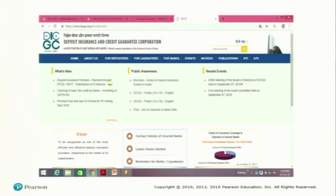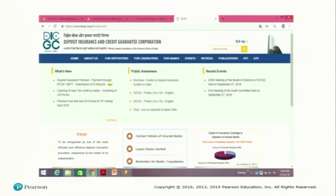In India, we have the Deposit Insurance and Credit Guarantee Corporation. I would suggest you visit the website to get all relevant information on its functions. The act was passed in 1961 and came into force on January 1st, 1962. This was prompted by the failure of Lakshmi Bank and Palai Central Bank in 1960; throughout the 1960s many banks in India faced banking crises. With two banks already failed, the government responded with the Deposit Insurance Act in 1961, and the scheme came into effect in 1962.